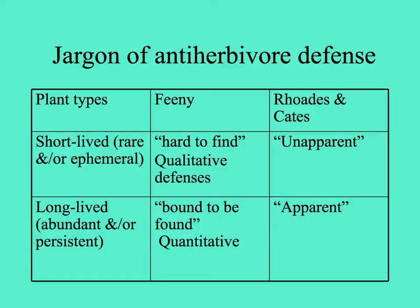Over the years, ecologists have studied plant defenses theoretically. Feeney categorized defenses of short-lived or rare plants — those that are hard to find — as using qualitative defenses like toxins. Whereas long-lived, abundant, or persistent plants are 'bound to be found,' and would benefit more from quantitative defenses — general-purpose defenses that become more effective at greater quantities. In the terminology of Rhodes and Cates, these plants are called either unapparent (benefiting more from toxins) or apparent (benefiting more from quantitative defenses).